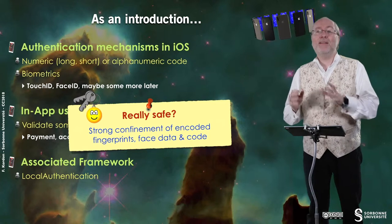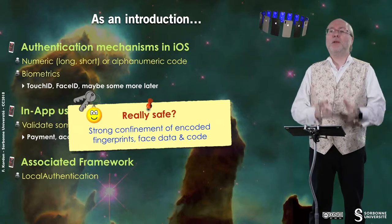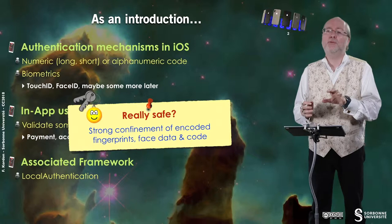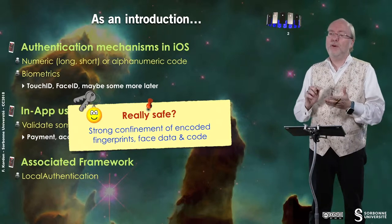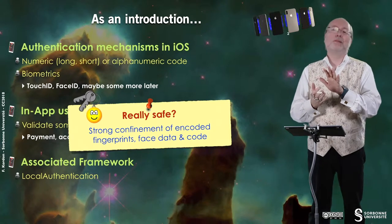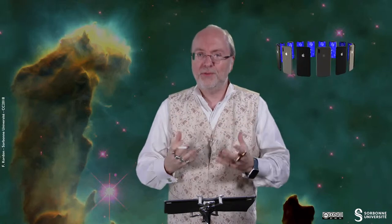There is a question: is it really safe? In fact, there is a strong confinement of encoded biometric data — typically fingerprints and face data, but also true for the code. It's so important that, for example, people discovered that when changing your screen and having non-matching serial numbers between the screen and the Touch ID sensor, Touch ID would stop working because there was a requirement for matching numbers. Encryption of information in small components is strictly enforced with a consistent set of parts in the device.